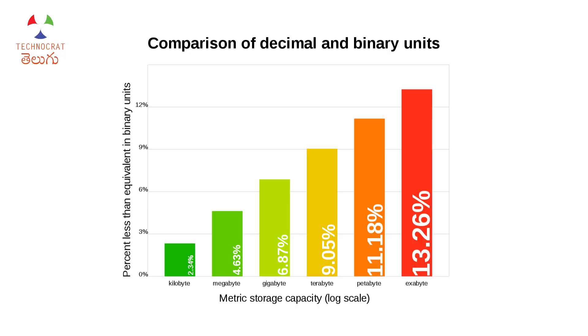There is a small difference at the kilobyte scale. However, if you multiply the difference up, it becomes very significant. At kilobyte scale, the difference is about 2.3 percent. But at gigabyte scale, it grows to about 6.87 percent. Through kilobytes, megabytes, and gigabytes, the percentage difference keeps increasing.